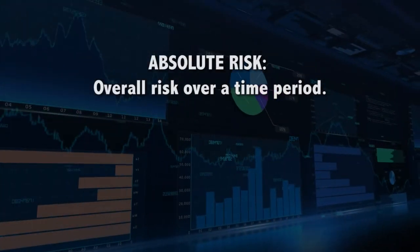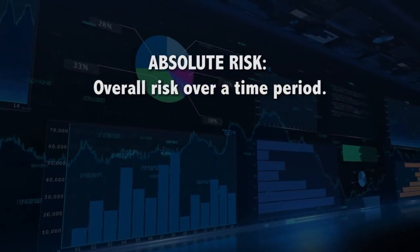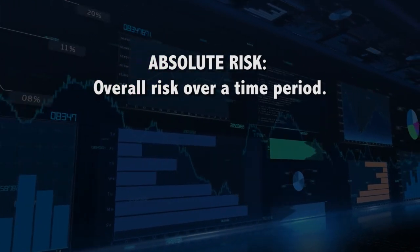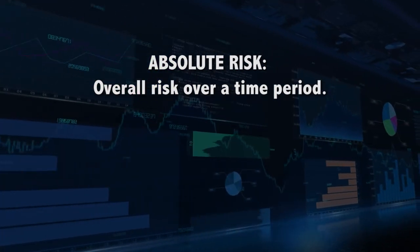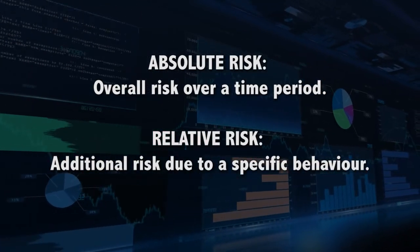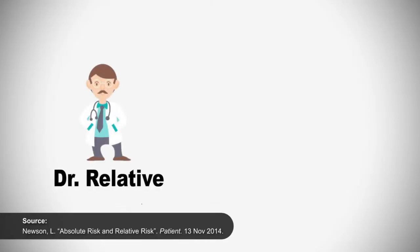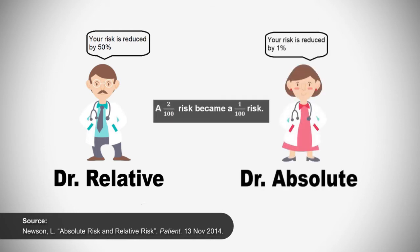So absolute risk describes the overall risk of an outcome over a time period, with or without a specific behavior that may affect it. Relative risk describes how much more likely that outcome will occur given a specific behavior. By only reporting on one of them, you leave out vital information. A large sounding increased relative risk of a deadly disease might not mean much if the absolute risk is still tiny. On the flip side, a smaller relative risk increase or decrease might change the absolute risk big time. So always look at both.